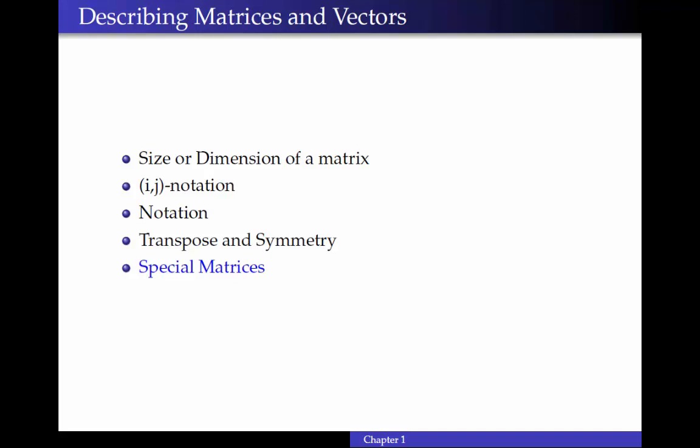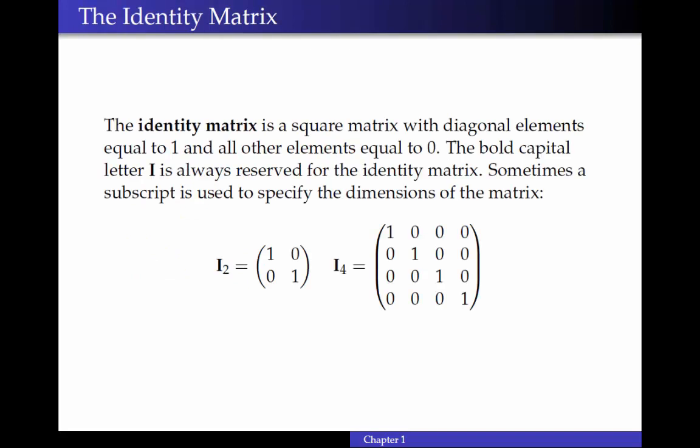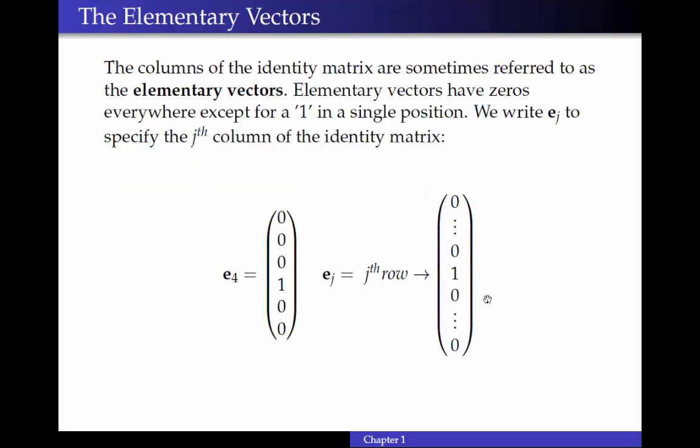The final topic that we're going to talk about in this introductory lesson is the idea of some special matrices. And we'll start with the identity matrix. The identity matrix is a square matrix with diagonal elements equal to one and all of the other elements equal to zero. The bold capital letter I is always going to be reserved for the identity matrix. And sometimes we'll use a subscript to specify the dimensions of the matrix. So I2 is a two-by-two identity matrix. And I4 would be a four-by-four identity matrix. Obviously, since the matrix is square, we only need one number to specify its size.